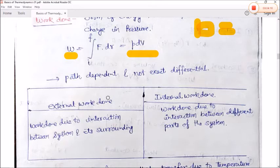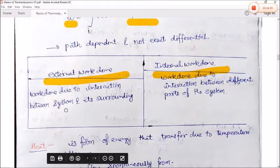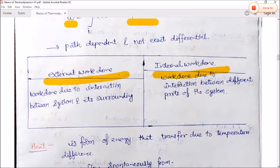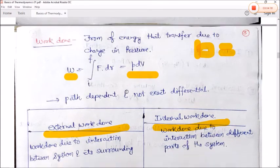There are two types of work done: external work done and internal work done. Work done due to the interaction between the system and its surroundings is called external work done. Work done due to the interaction between different parts of the system is called internal work done.